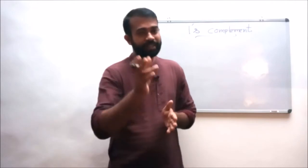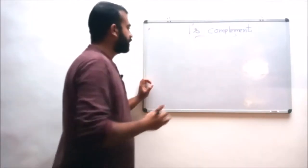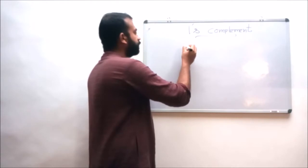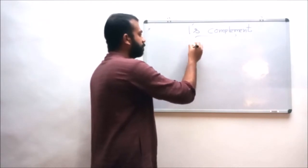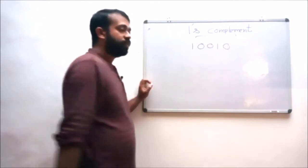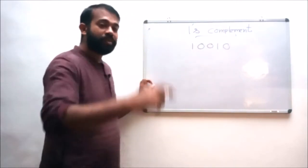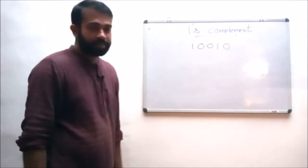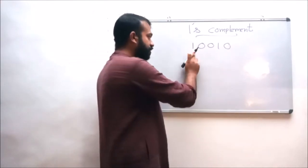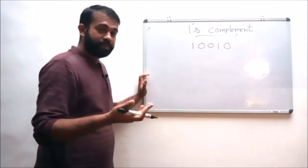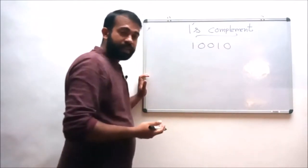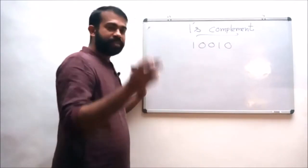For that, let us consider an example. Consider the number 1 0 0 1 0, and what we have to do is find the one's complement of this number. For representing the one's complement, what we have to do is inverse or revert these particular bits. That is, zero is replaced with one and one is replaced with zero.